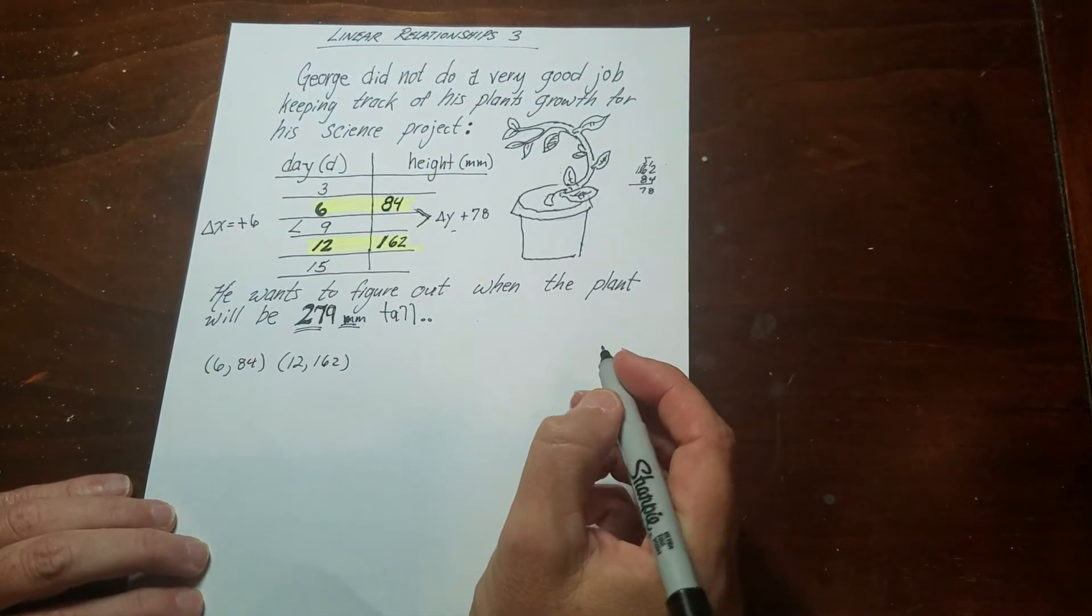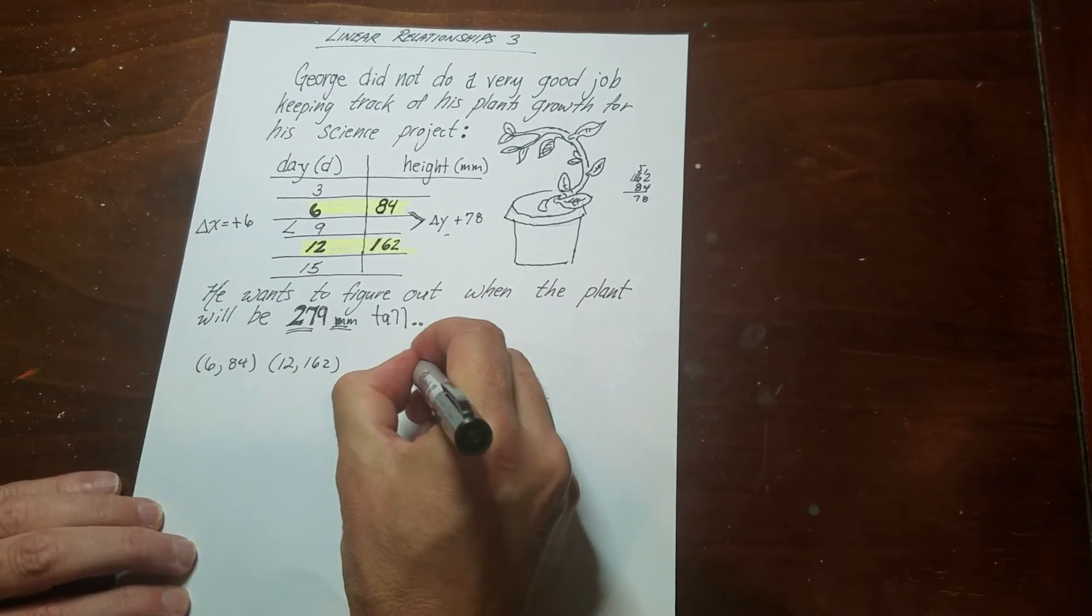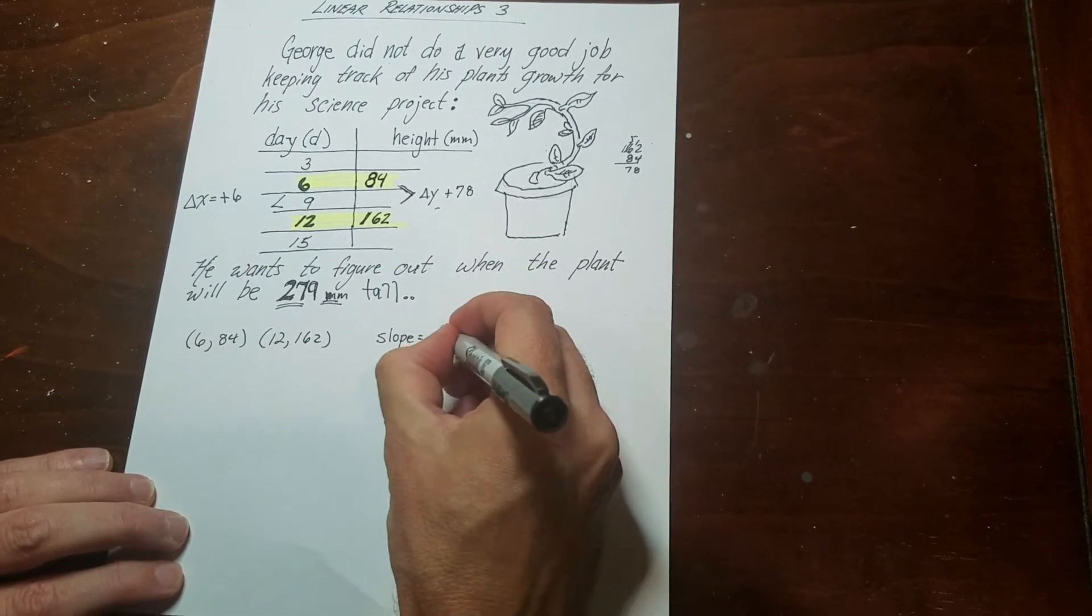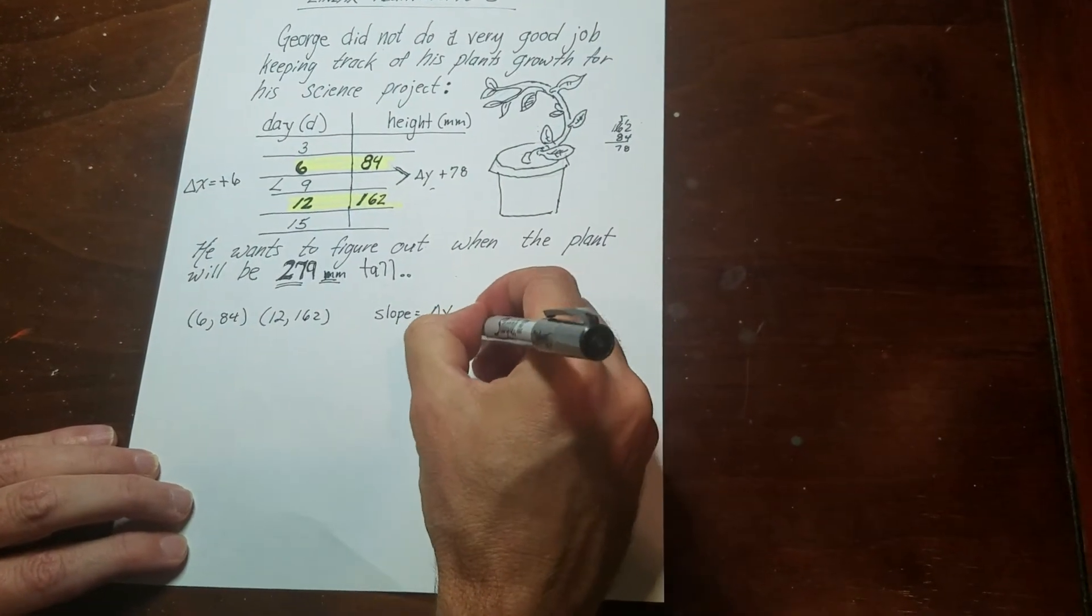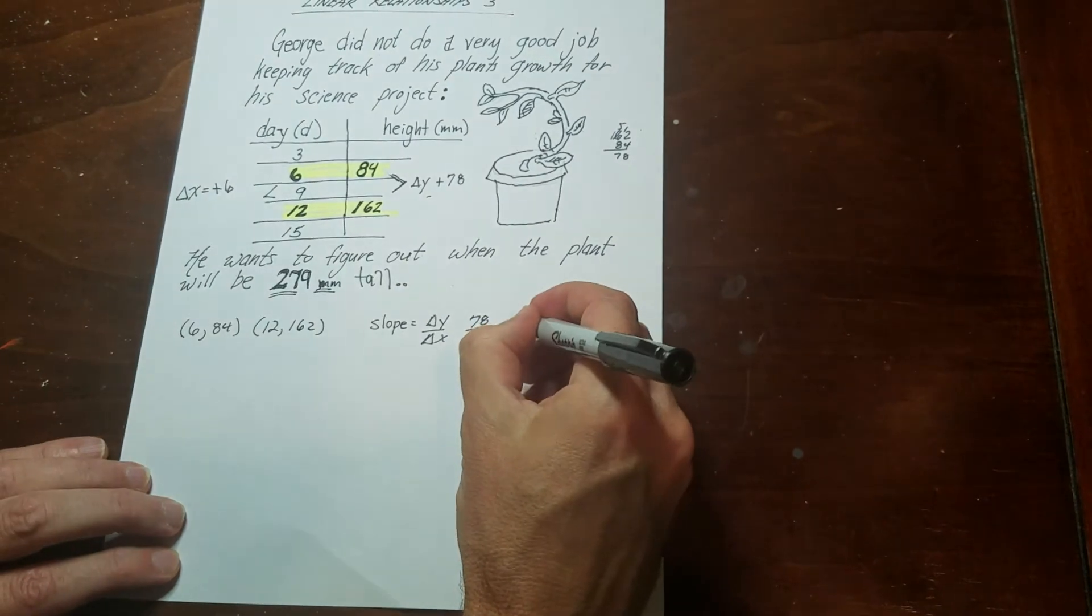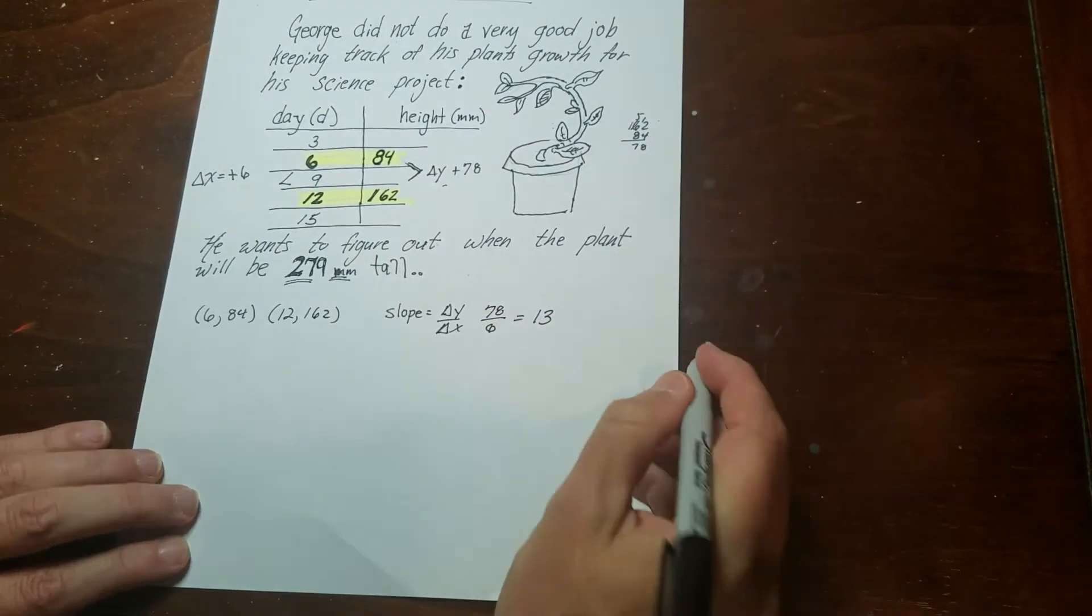So remember that slope is delta y over delta x. And so I'm going to do 78 over 6. And that comes to 13. So that's my slope.